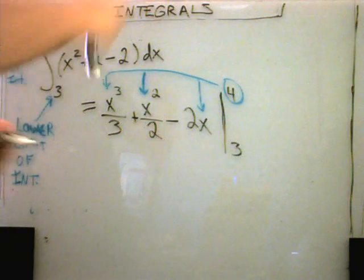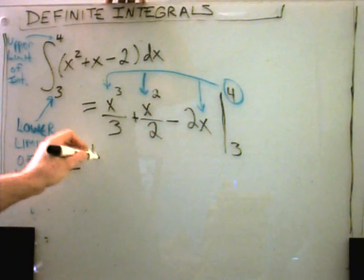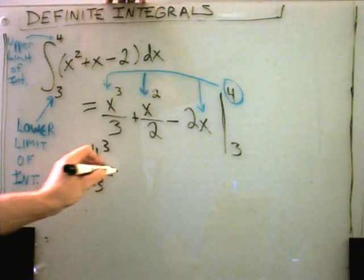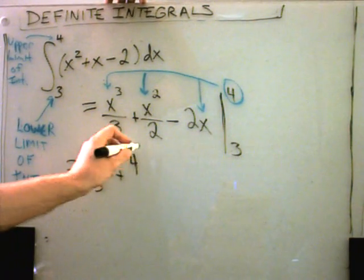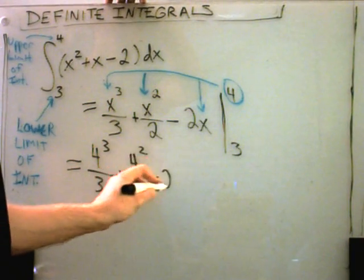Alright, well let me do that. So if I substitute that in, I'm going to get 4 cubed over 3 plus 4 squared over 2 minus 2 times 2.